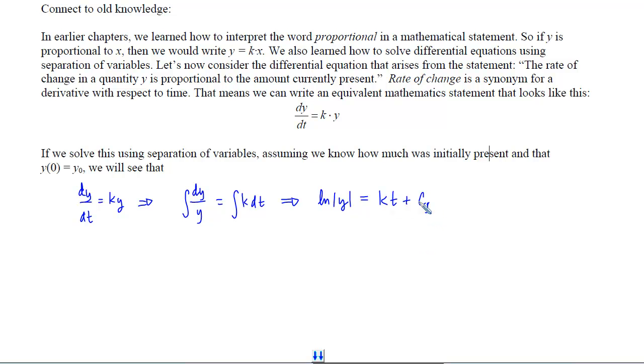Now remember I'm at the crossroads. I can either completely isolate y first and then plug in the point, or I can plug in the point and then isolate y. Because my antiderivative involves a log, I will have fewer issues if I isolate the y first. So let's recall that the first thing I would do to isolate that y is I would move the natural log by making both sides exponents of e.